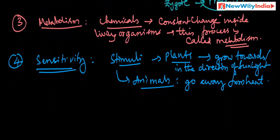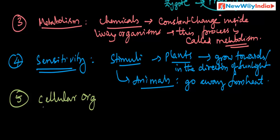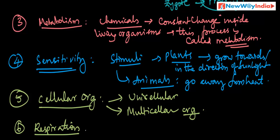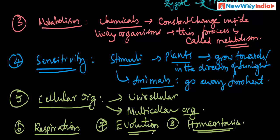The fifth one is cellular organization, meaning unicellular and multicellular. Living organisms either have unicellular or multicellular organization. Other characteristics include respiration as the sixth, evolution as the seventh, and homeostasis as the eighth. These are the fundamental characteristics of living beings.